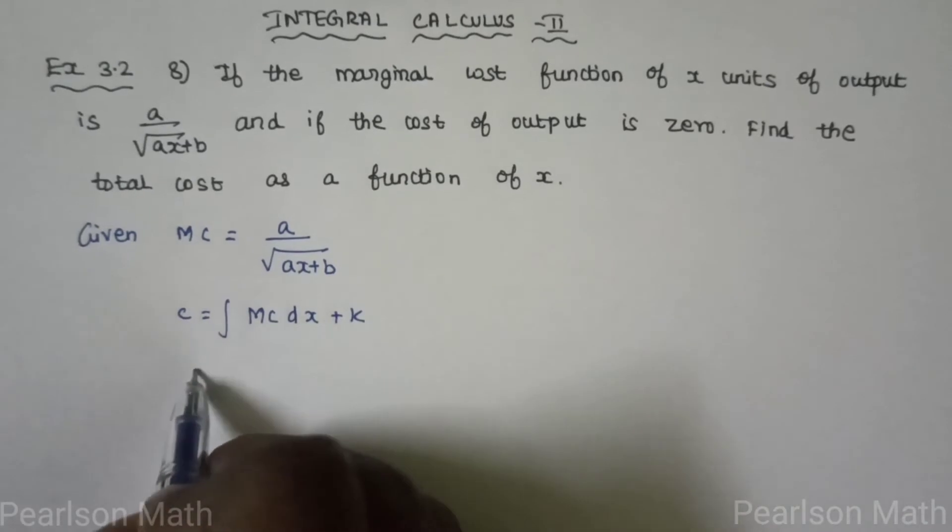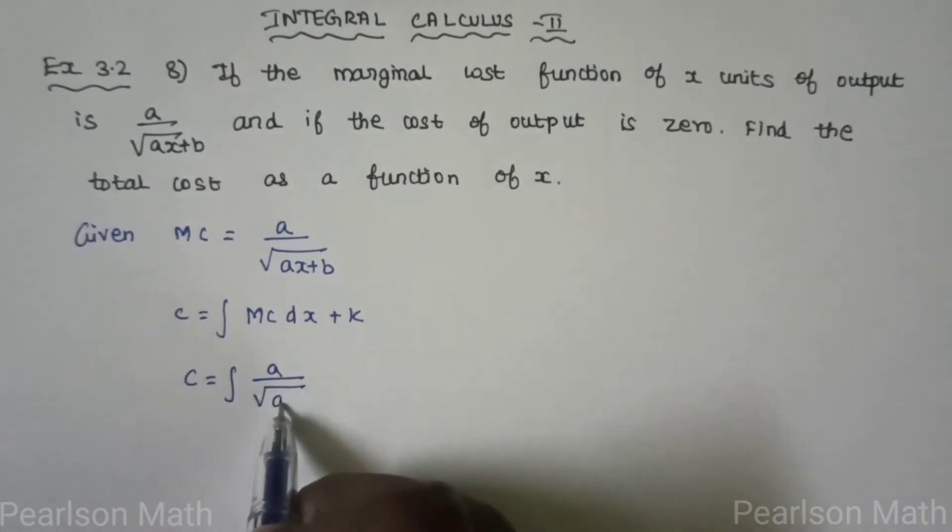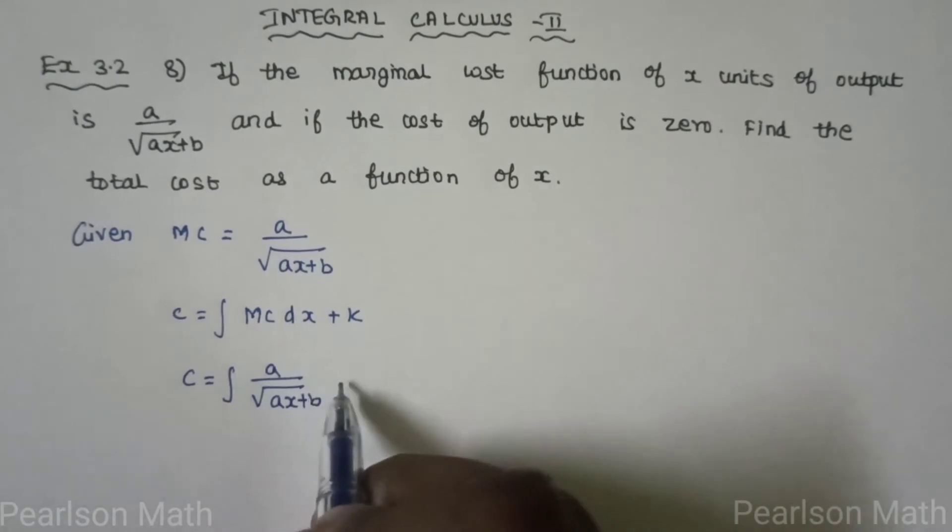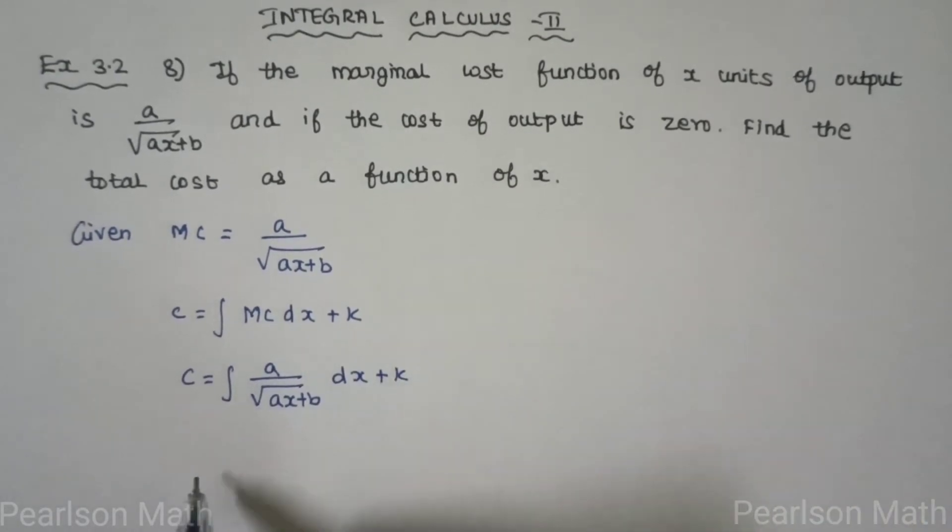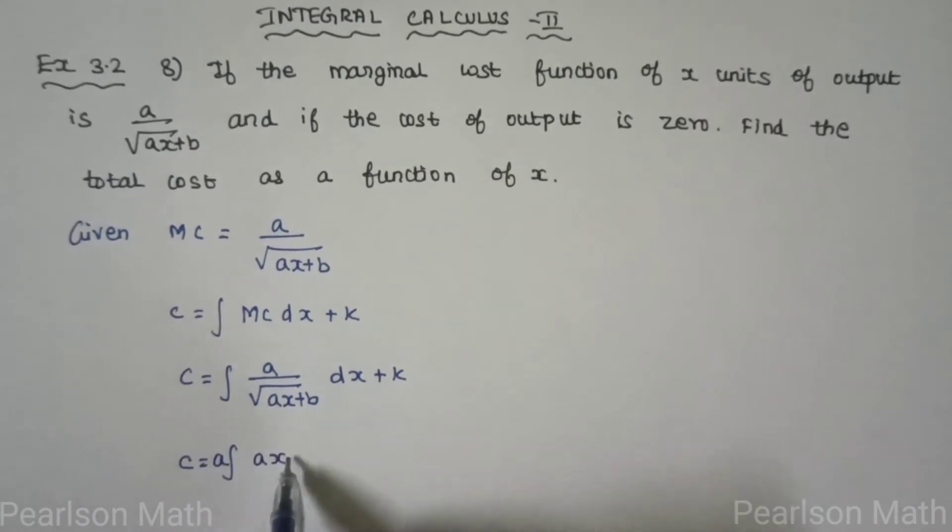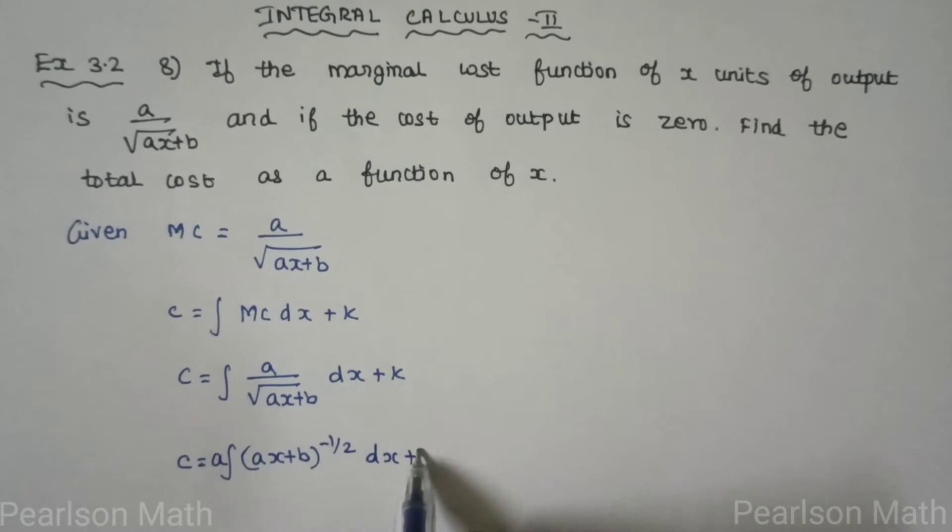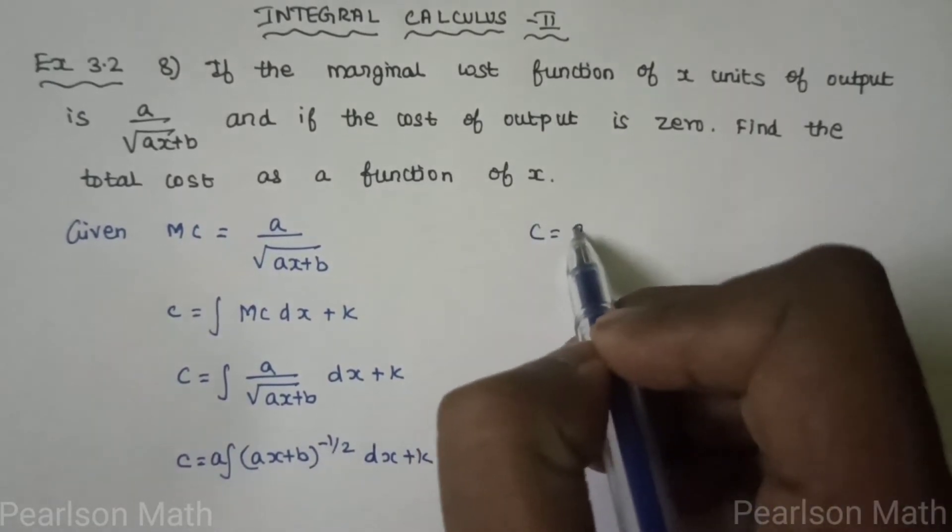So C equals integration of a by root of ax plus b into dx plus k. We have a value, this is constant, so a into integration of this. The denominator is the root of a power, numerator is minus 1 by 2, into dx plus k.